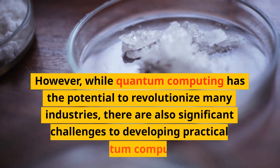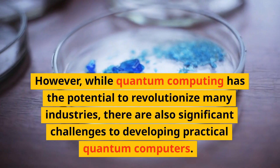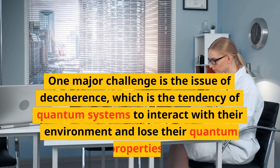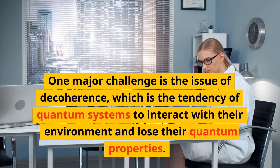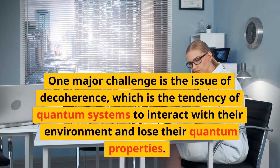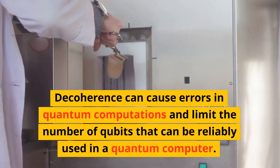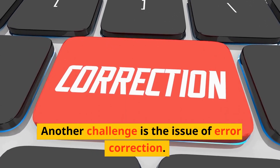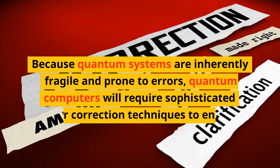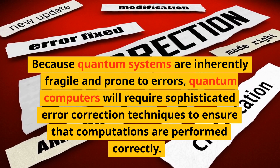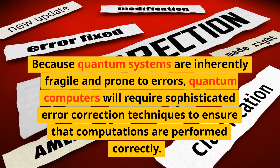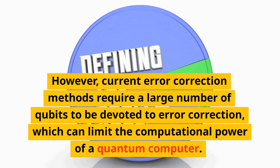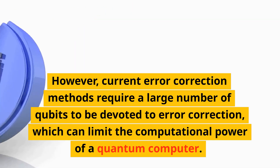While quantum computing has the potential to revolutionize many industries, there are also significant challenges to developing practical quantum computers. One major challenge is the issue of decoherence, which is the tendency of quantum systems to interact with their environment and lose their quantum properties. Decoherence can cause errors in quantum computations and limit the number of qubits that can be reliably used. Another challenge is error correction — because quantum systems are inherently fragile and prone to errors, sophisticated error correction techniques are required, but current methods demand a large number of qubits devoted to error correction, limiting computational power.